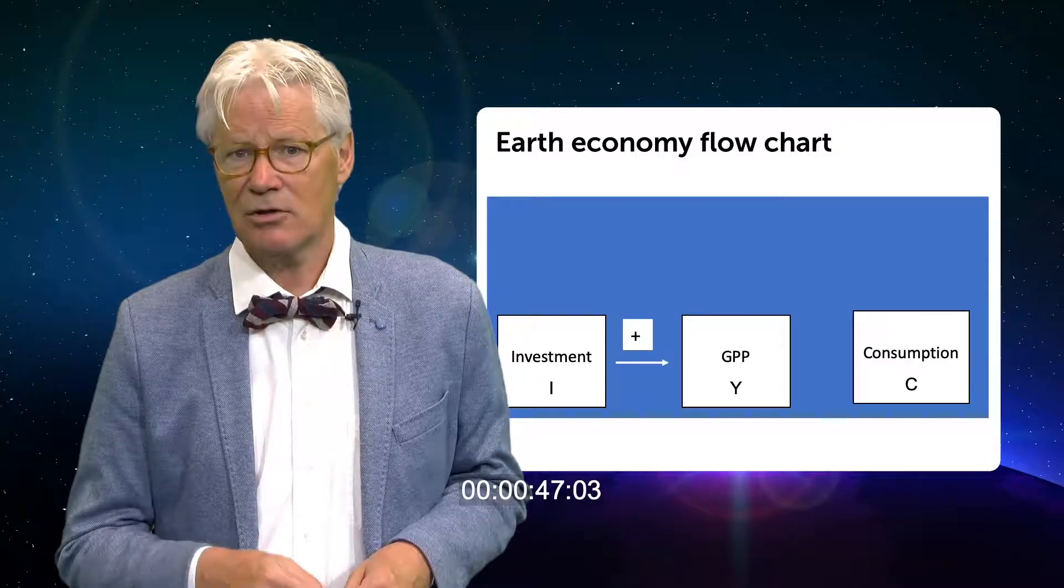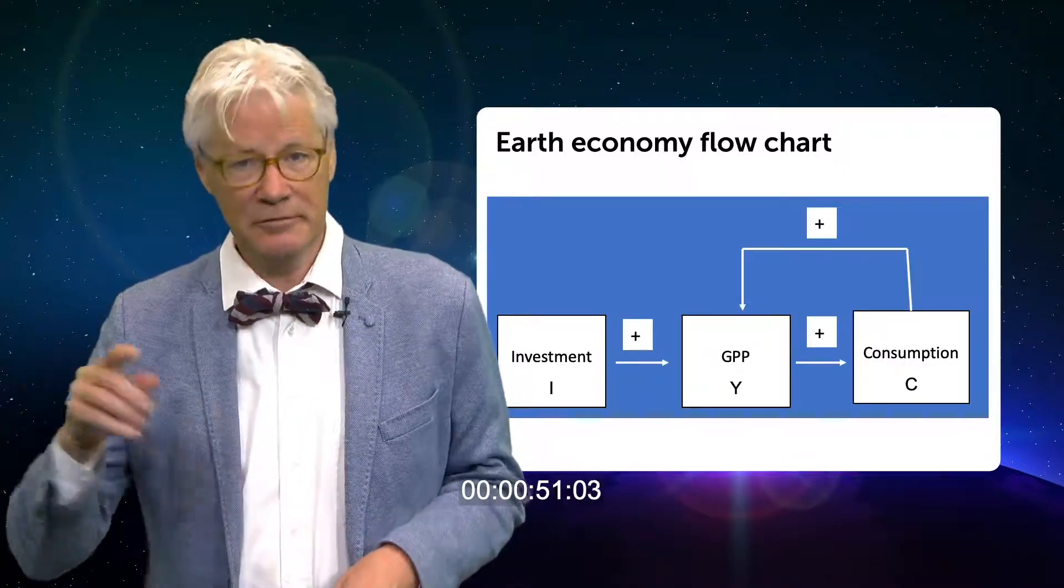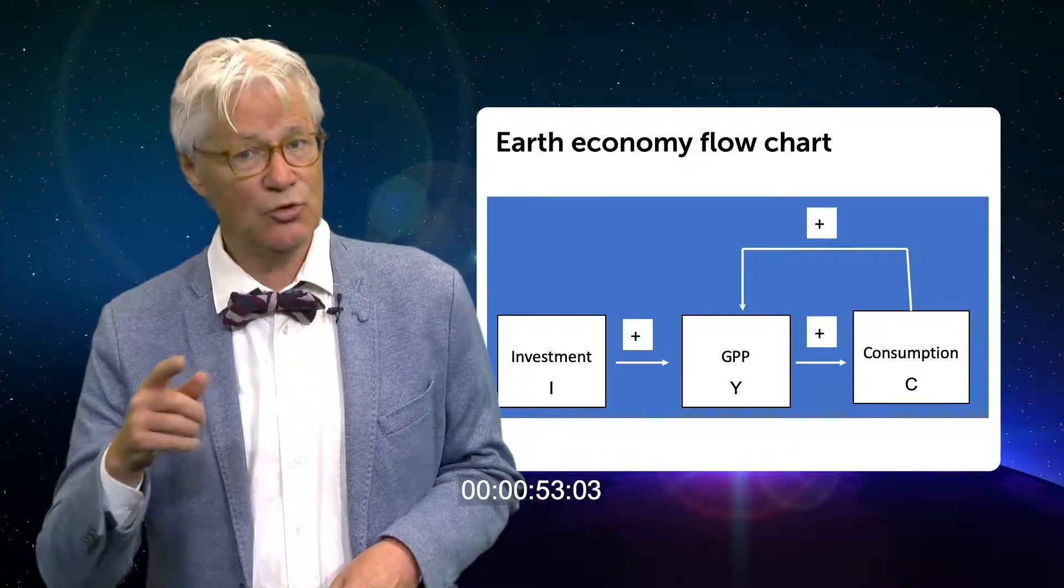A larger GPP means that consumption increases. And finally we have the multiplier, the feedback loop from consumption to GPP.